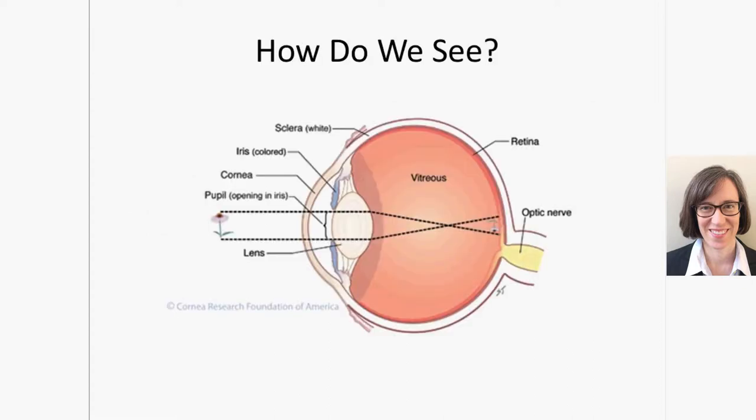This is a diagram of the eye. To briefly go over how we see — if you're looking at a flower, there's light reflecting off the flower and going into your eye from all different angles. The cornea, which is the tissue on the front of the eye, and the lens, which is the oval structure within the eye, are the tissues responsible for bending and focusing the light rays into the correct spot on the back of the retina. The retina then processes that light and sends the signal to the brain, where your brain interprets what you're seeing.